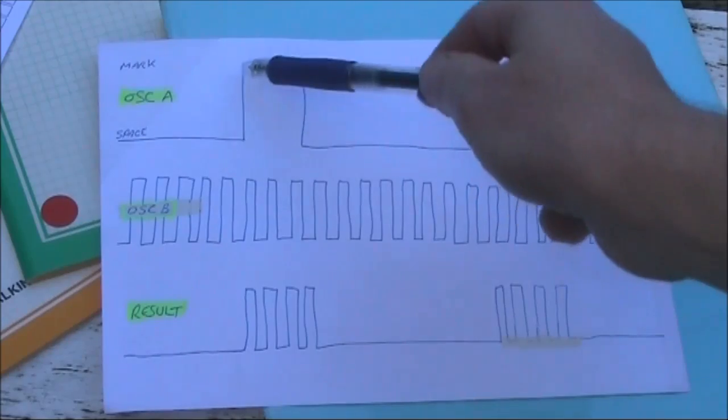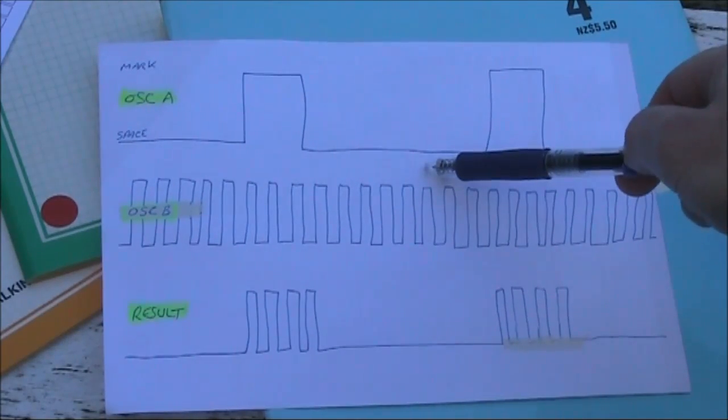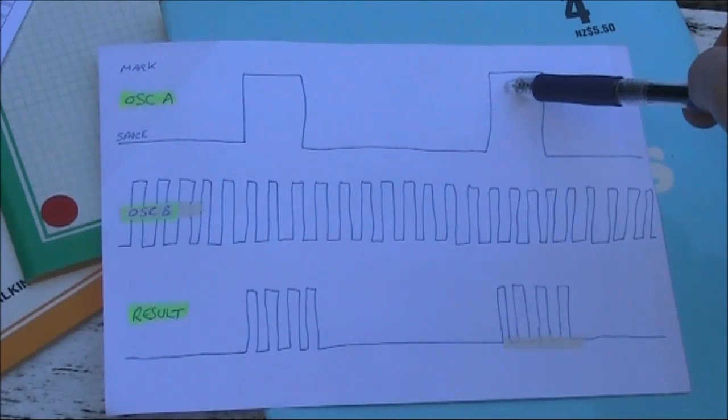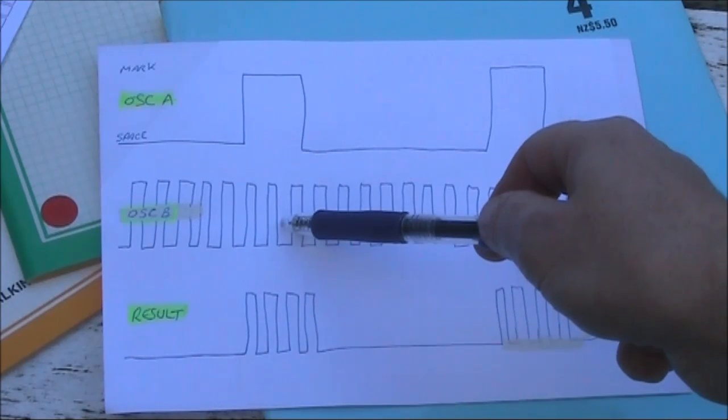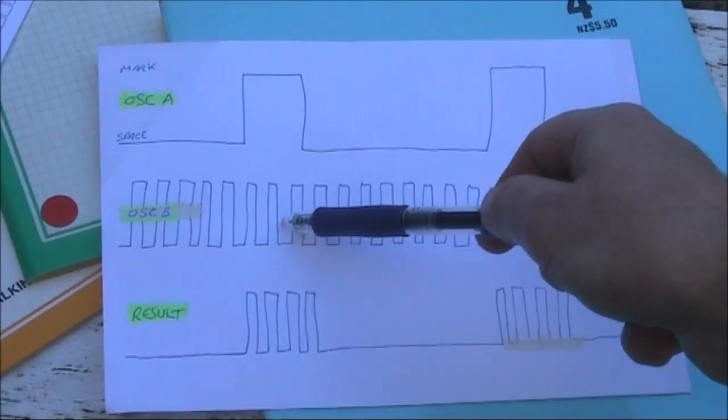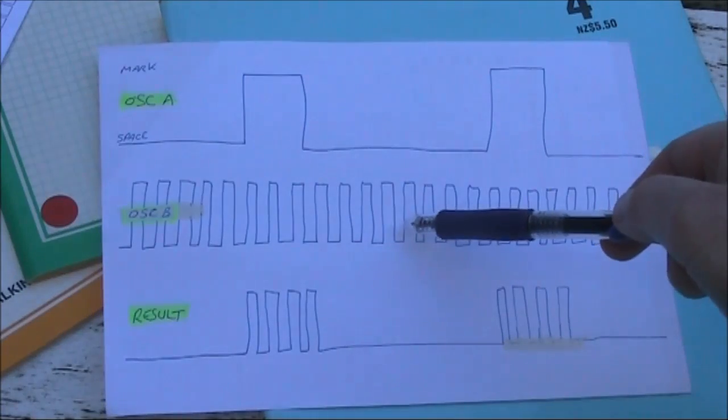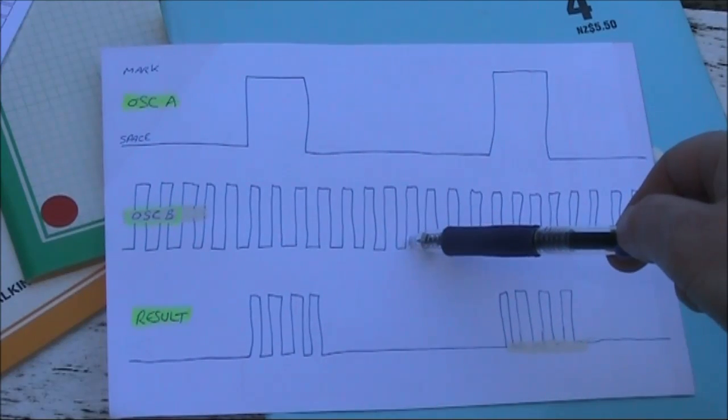The first oscillator is only on for a minority of the time. It might be off for 4 or 6 seconds, and on for a couple of seconds only. Now this is the waveform of the second oscillator if its inputs were tied together, and it was operated independently of the first. It's a higher frequency signal, which is on all the time, with a one-to-one mark-to-space ratio.